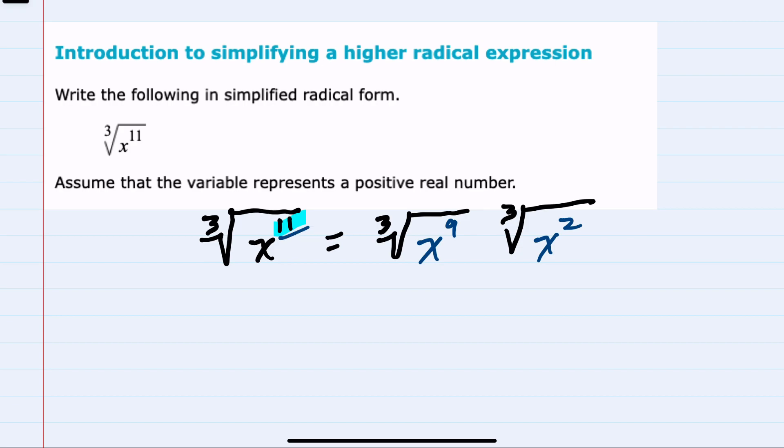Now that we've written this as x with a power that is a multiple of 3, I should recall that the cube root can be rewritten as a fractional exponent. Meaning here that 1/3 of 9 simplifies as x to the 3rd power.